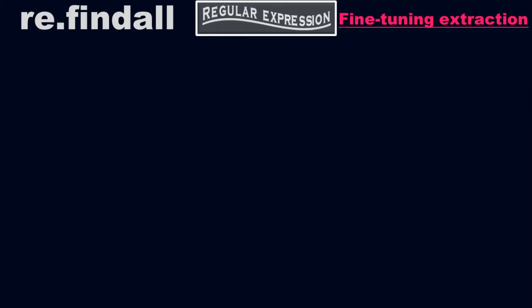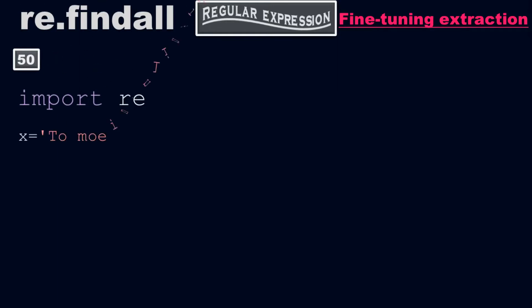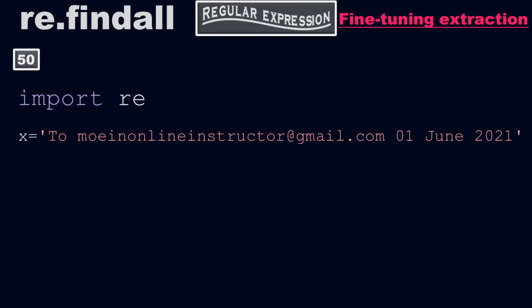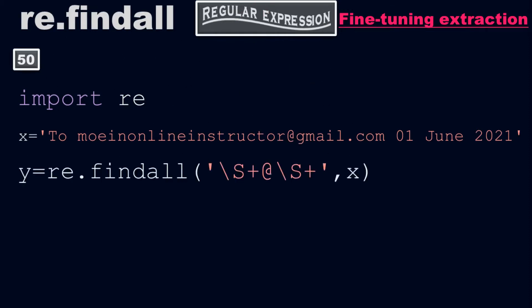Let's talk about the regular expression where we can do fine-tuning extractions out of the line. Example number 50. We employ the regular expression library here. My x equals to 'moinonlineinstructor@gmail.com 01 1st June 2021'. y equals to re.findall of backslash capital S plus, at the rate, backslash capital S plus, comma x.